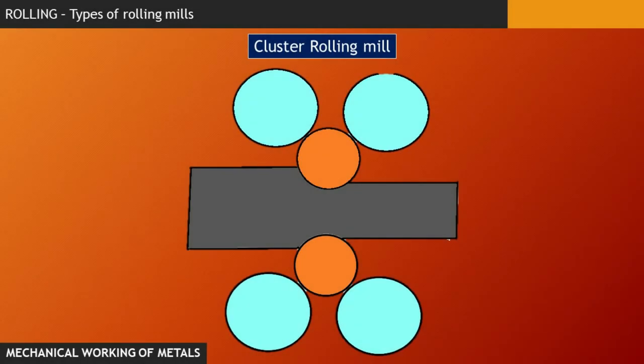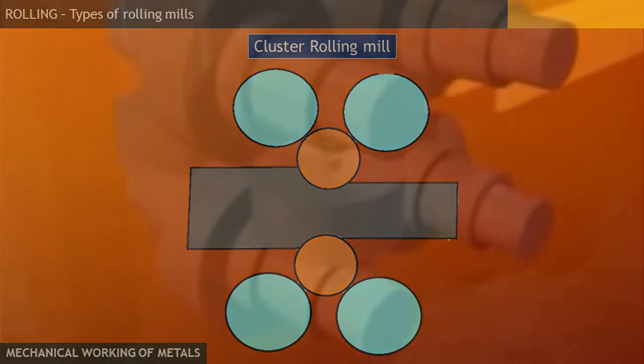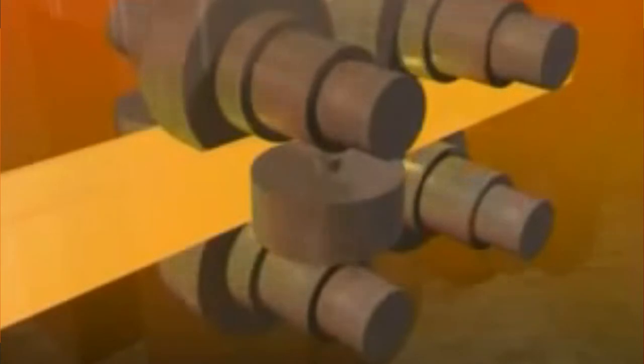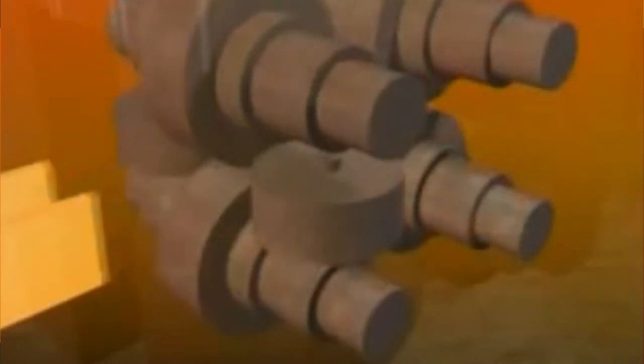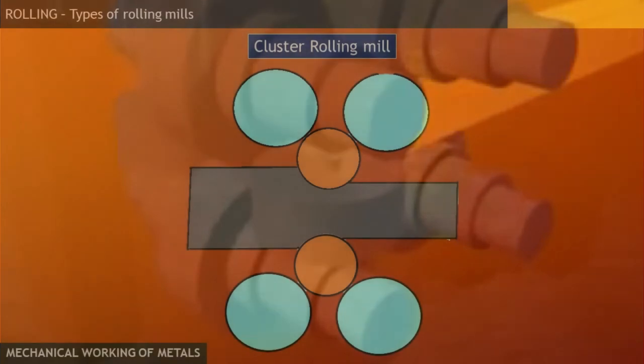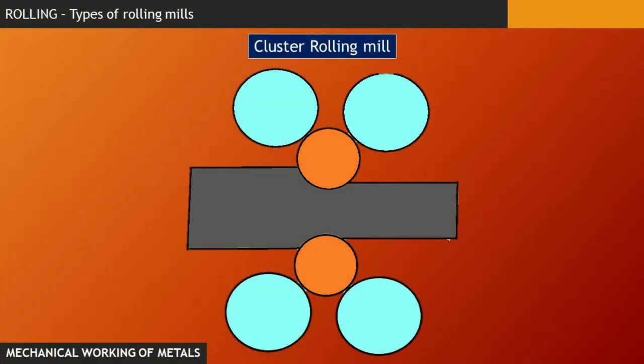And next, we have cluster rolling mill. A cluster rolling mill is just an advanced version of backup rolling mill or a four-high rolling mill. Here, a number of backup rollers are employed to further reduce the force and power that is being imparted on the actual rolls. And here also, the backup rolls are not driven by any external power. They are driven by the smaller rolls itself.